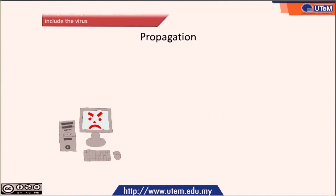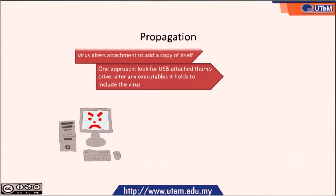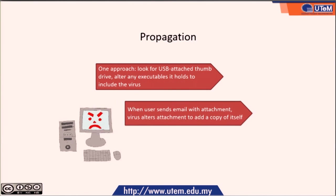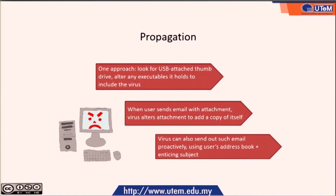How can viruses propagate in our system? When a virus runs, it looks for an opportunity to infect additional systems. For example, one approach is to look for a USB thumb drive that is accessible, which can then hold the virus. Or it can be sent by email with an attachment that has been altered to contain a copy of the virus. Viruses can also send out email activity using the user's address book, with an enticing subject line.